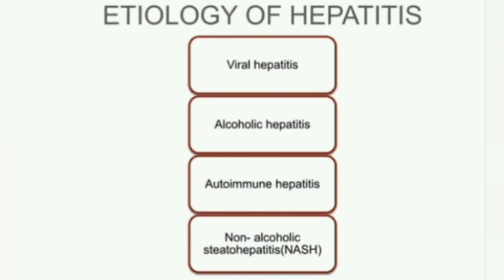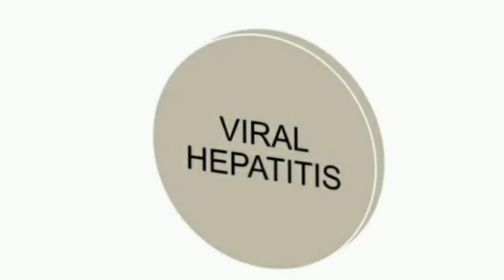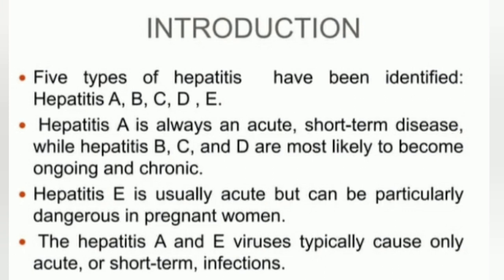Etiology of Hepatitis: Viral Hepatitis, Alcoholic, Autoimmune, and Non-Alcoholic Hepatitis. We will discuss Viral Hepatitis first. Five types of hepatitis have been identified: Hepatitis A, B, C, D, and E.